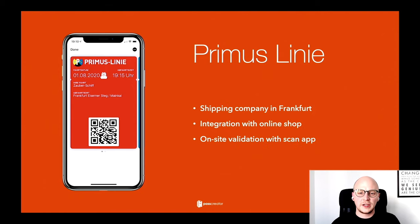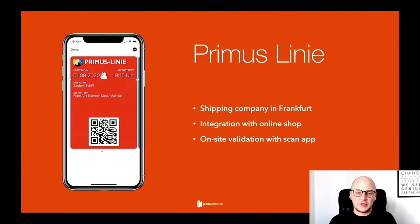Primus Line is a shipping company from Frankfurt, Germany. Their wallet pass layout looks similar to a boarding pass from airlines — the same concept, just used to board a ship. They've built an integration with their e-commerce store: if you order a ticket for their ships, they automatically create a wallet pass version and offer it right after checkout. They also send the download link via email. On-site, an employee uses the Companion app to scan and validate passes. They also have print versions, but that's not our core business.